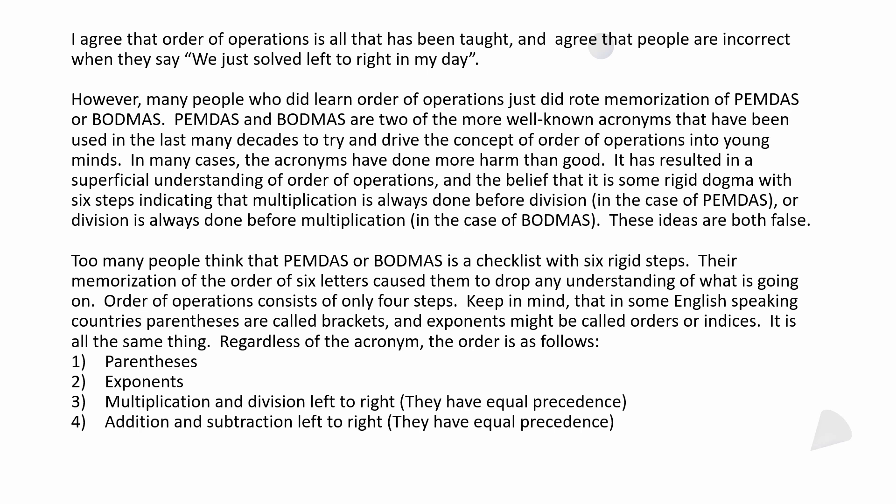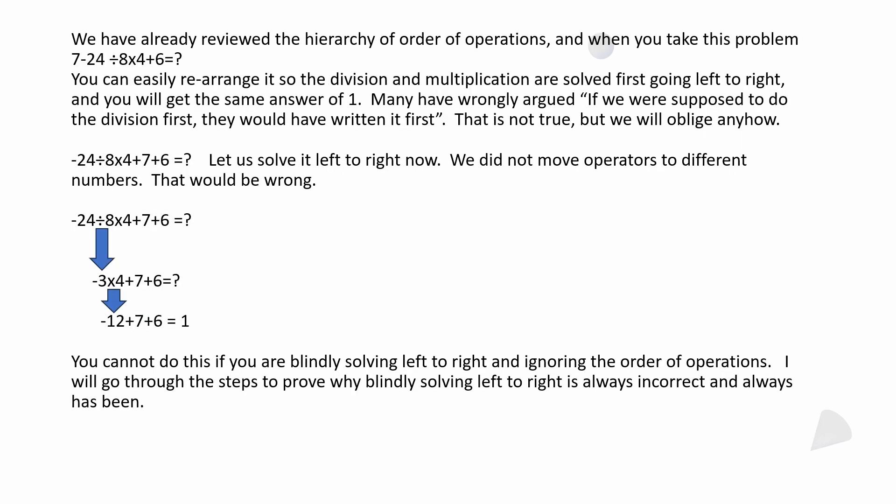Too many people look at PEMDAS or BODMAS as some kind of a checklist with six rigid steps, and their memorization of the order of those six letters caused them to drop any understanding they could have had of what's really going on. The order of operations consists only of four different steps. In some English-speaking countries, parentheses might be called brackets, exponents might be called orders or maybe even indices. It's all the same thing. Regardless of the acronym, the order is parentheses number one, then exponents, then multiplication and division left to right, addition and subtraction left to right. So it's just four steps. If you're missing any of those, you just go down to the next one. You don't toss out the whole thing.